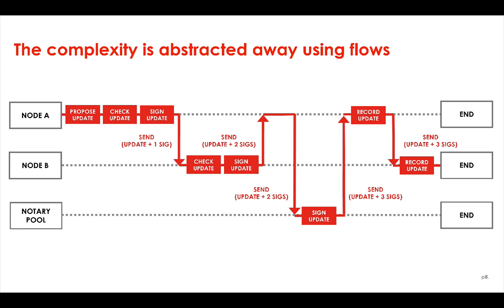And this is only an example of a flow. The flow framework is completely flexible — you could write a flow that doesn't speak to any other nodes, or a flow that doesn't update the ledger at all, or a flow that does database operations or HTTP calls. It's completely up to you as the Corda app developer.